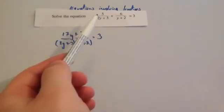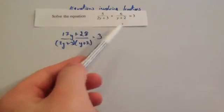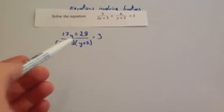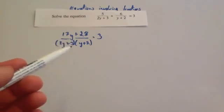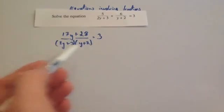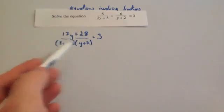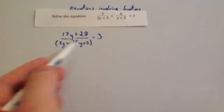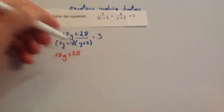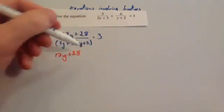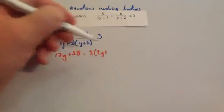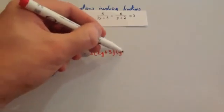Now we go back to the question. I've replaced the algebraic fraction addition with what we worked out. So we've got 17y plus 28 all divided by (2y plus 3)(y plus 2) equals 3. Multiplying both sides by the denominator — it cancels out on this side, leaving 17y plus 28 — and on the other side we get 3 bracket (2y plus 3) bracket (y plus 2).